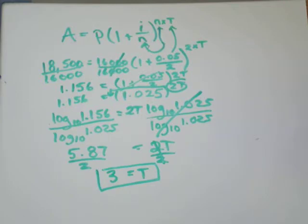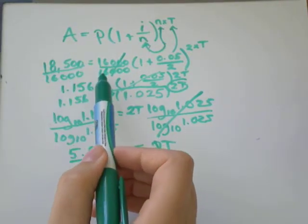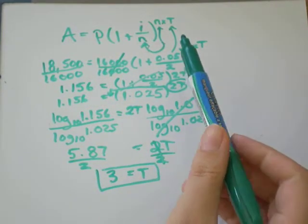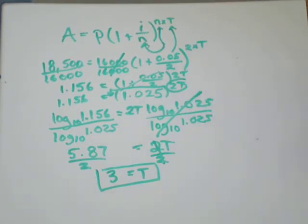So t, the time in years, is equal to 3. So it took 3 years of paying this loan. And I ended up paying $18,500 for a loan that originally cost $16,000 because I was paying 5% interest compounded semi-annually over 3 years.